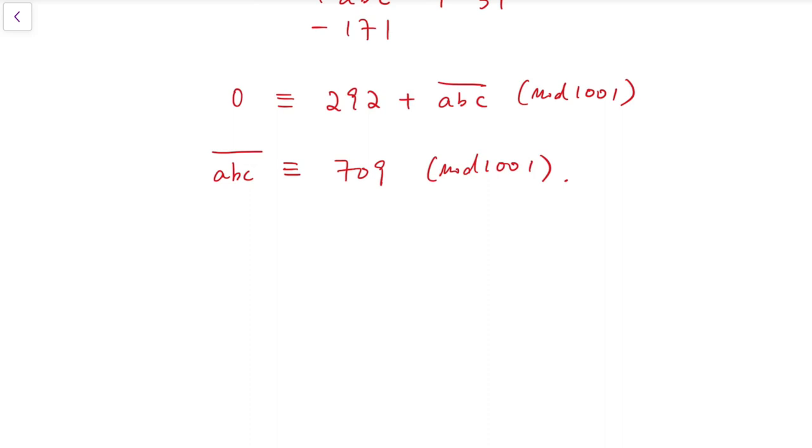And there we go, because there is only one possible case for the 3-digit number abc, and that means a is equal to 7, b equal to 0, and c equal to 9. So that 3-digit number is exactly equal to 709.